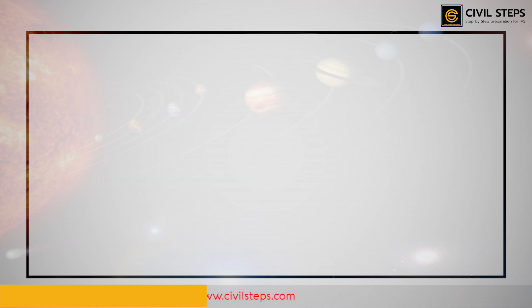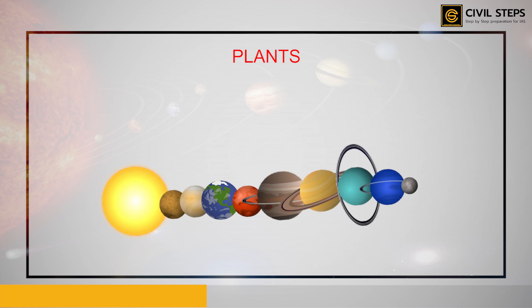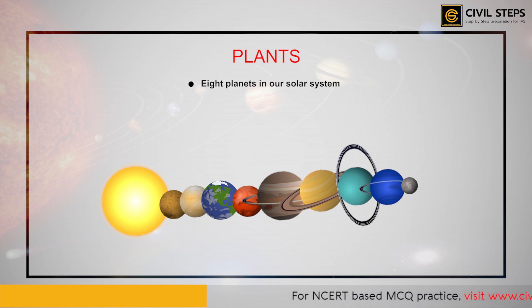We know that Earth is also a planet. But apart from Earth, there are seven other planets in our solar system. Altogether, there are eight planets in our solar system, which get their heat and light from the Sun. In order of distance from the Sun, the planets are as follows: Mercury, Venus, Earth, Mars, Jupiter, Saturn, Uranus, and Neptune.